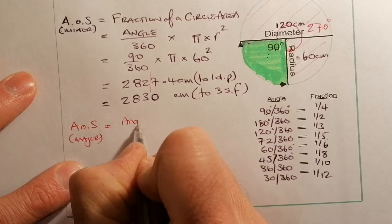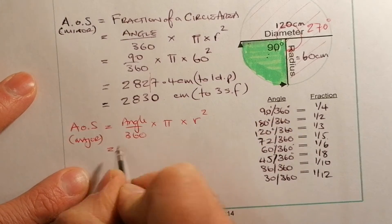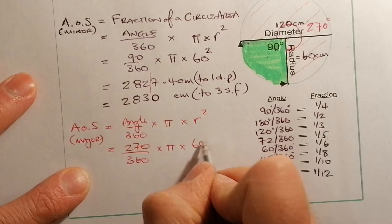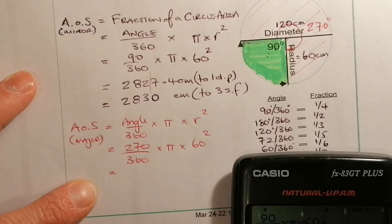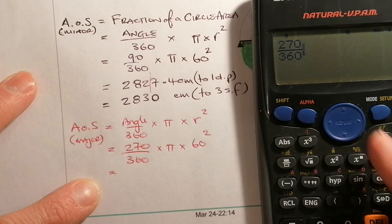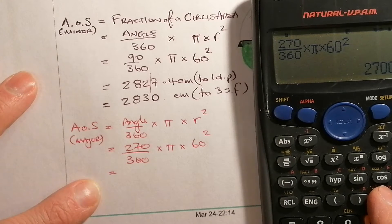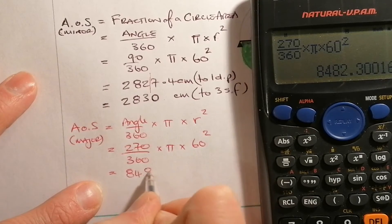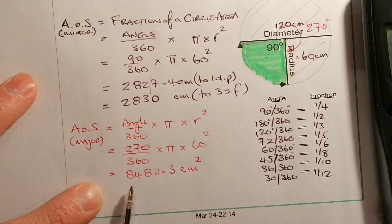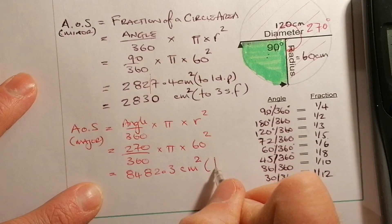The formula is the same: angle over 360, multiplied by pi, multiplied by the radius squared. The angle is 270, divided by 360, times pi, times 60 squared — remembering that's the radius squared. On the calculator, I enter the fraction 270 over 360, multiply by pi, multiply by 60 squared. That gives 2700 pi. Pressing the SD button gives 8482.3 centimetres squared, to one decimal place.